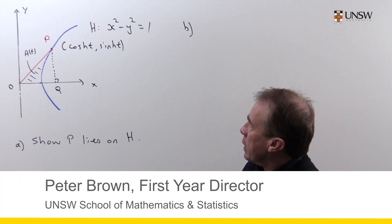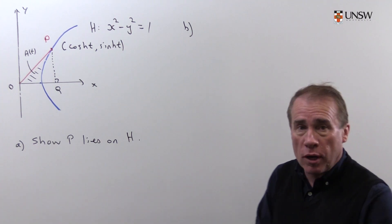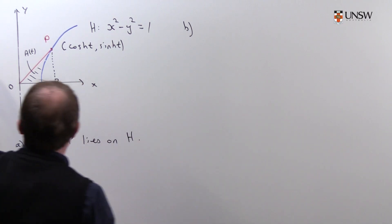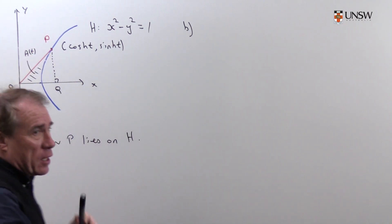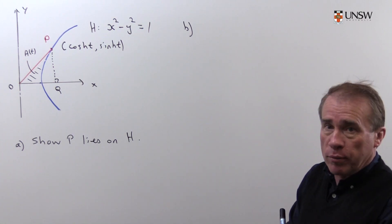I'm going to solve this problem here involving the hyperbola, which I call H, which is x squared minus y squared equals 1. Now, of course, it has two branches. There's a second branch over the other side, but we're only concerned with the right-hand branch in this problem.